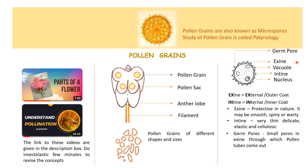The intine is very thin, it is delicate, it is elastic in nature and it is a cellulosic wall layer. The pollen grains also have small pores in the exine through which the pollen tube comes out during germination. These pores are known as germ pores.